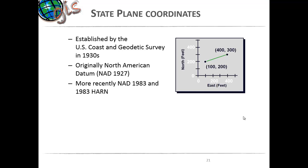State plane is very critical because it is used in local government at a large scale. It was established by the US Coast and Geodetic Survey in the 1930s, has all positive coordinates, and references NAD — the North American Datum. The most recent version is NAD 1983. You can find these coordinate systems in the walkthrough under the NAD 1983 folder.